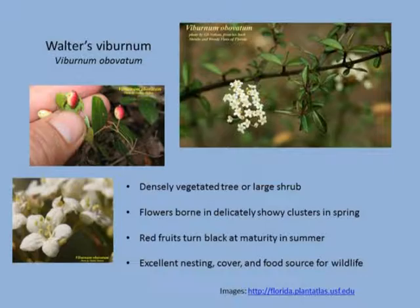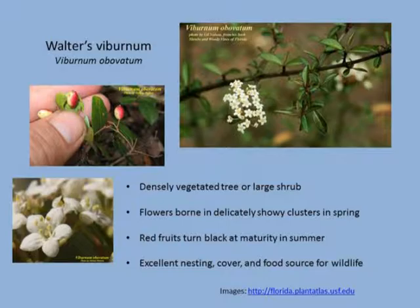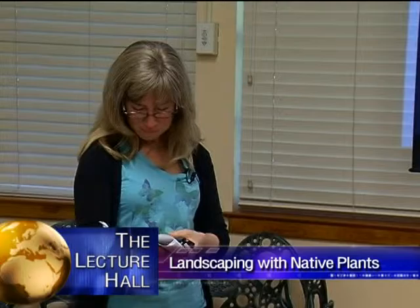Walters viburnum is another pretty one — an evergreen shrub with small leaves that forms a very dense growth, so you can use it for screening as a hedge. It can be pruned. It produces delicate clusters of white flowers, I believe in the springtime, and then fruits as well. I had a bird's nest in mine at home — it was kind of nice.